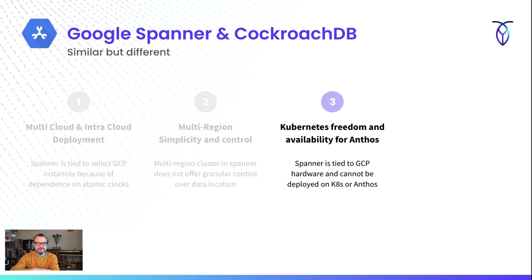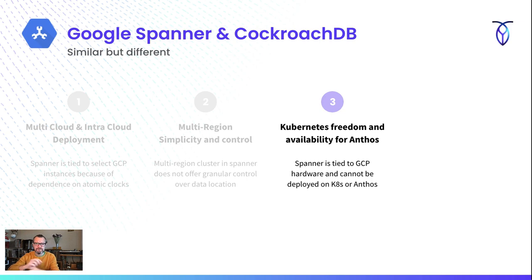The third difference is the freedom of using this in Kubernetes. Since Spanner is tied to explicit hardware, you can't really deploy it ad hoc in any Kubernetes cluster. CockroachDB was built as a distributed system and really optimized for distributed environments like Kubernetes, or even in Anthos, which is the Google version that will run on any cloud. So if you're going to be running Kubernetes, CockroachDB can run directly on that, even with any version of it.